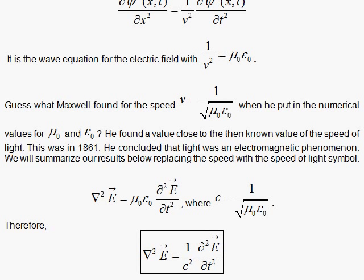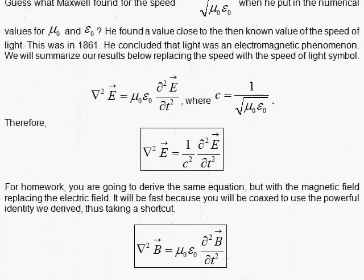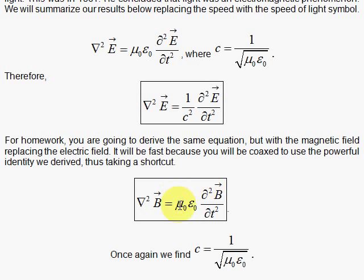You are going to work with the magnetic field and show that the magnetic field, using that nice identity I derived, you'll be able to get this result rather quickly. Very beautiful result. The wave equation for the electric field, the wave equation for the magnetic field, and the speed of the waves, 1 over the square root of μ₀ε₀, that is the speed of light.